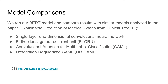In the next slide, we compare our model against models from the Explainable Prediction paper, specifically their one-dimensional convolutional neural network, their bidirectional gated recurrent unit, their convolutional attentional model for multi-label classification (CAML), and their description-regularized CAML model. The CAML model is the primary model of interest we will be comparing against.